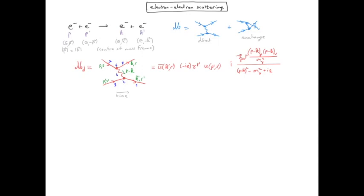However, because of energy conservation at each vertex, there is only one possible value which survives and which is killed by the delta function. So we have already used that in writing the momentum for the photon as p minus k.